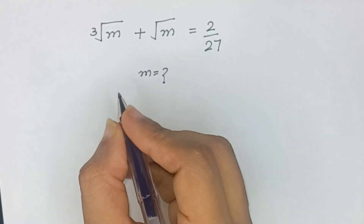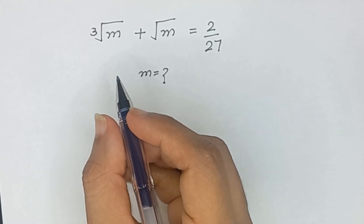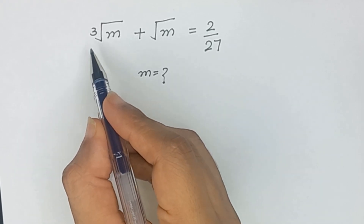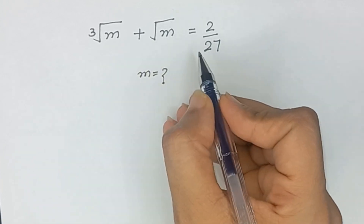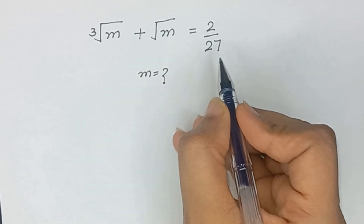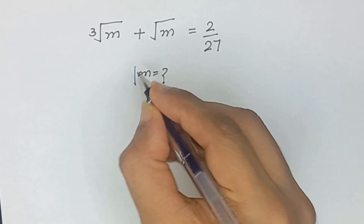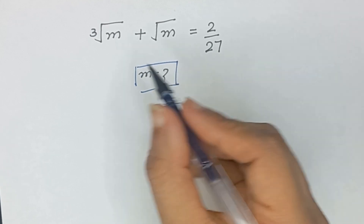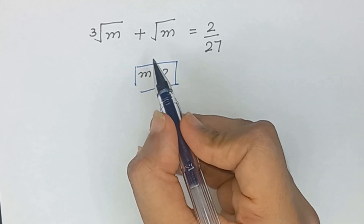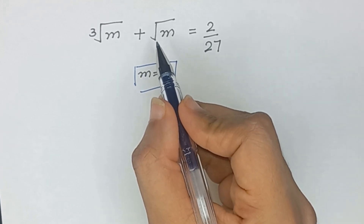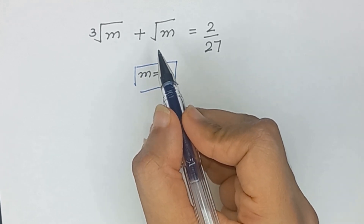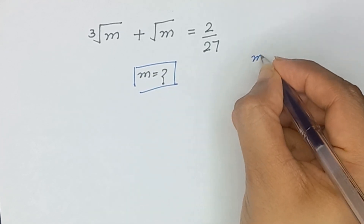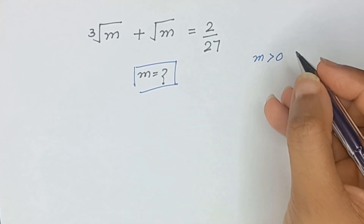Hello friends, welcome back to my channel. In this video we will solve a nice radical equation: cube root of m plus square root of m is equal to 2 divided by 27, and we will solve this equation for m. Since m is under a square root, a real solution of m must be greater than 0.